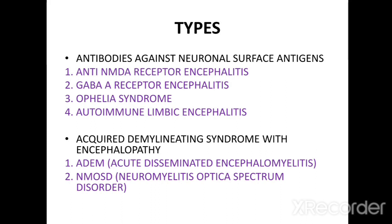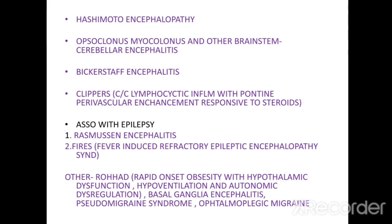The types of autoimmune encephalitis: the first category is auto-antibodies against neuronal surface antigens — anti-NMDA receptor encephalitis, GABA-A receptor encephalitis, Ophelia syndrome, and autoimmune limbic encephalitis. The second category is acute demyelinating syndrome with encephalopathy, like ADEM or acute disseminated encephalomyelitis, neuromyelitis optica spectrum disorder, Hashimoto's encephalopathy, opsoclonus-myoclonus, and other brainstem cerebellar encephalitis.